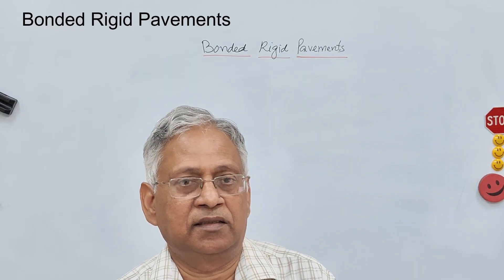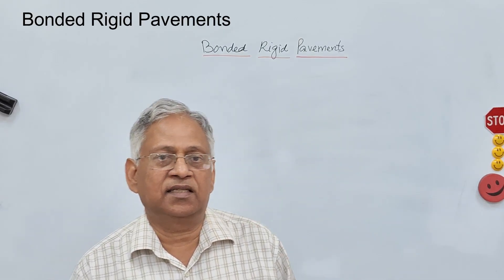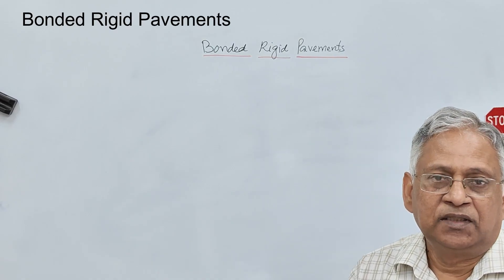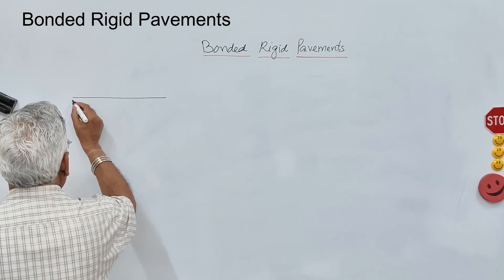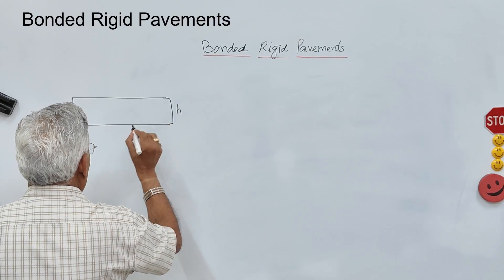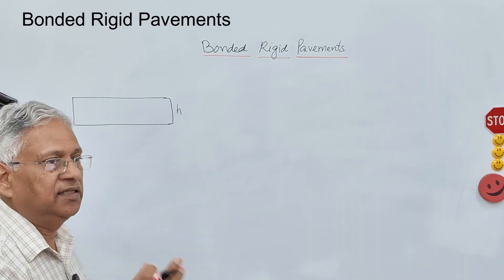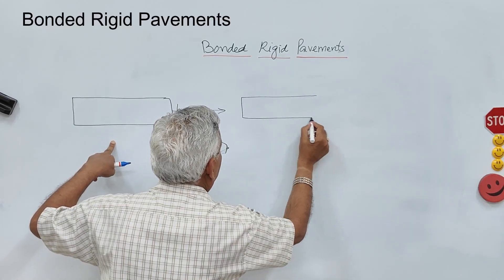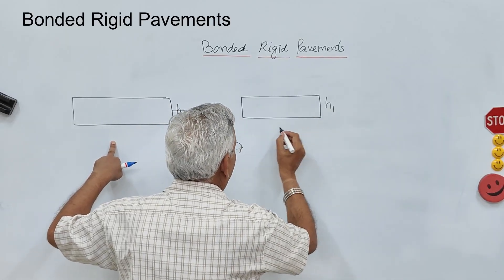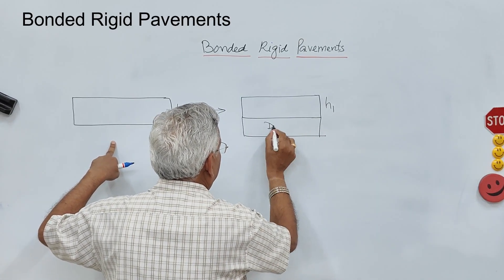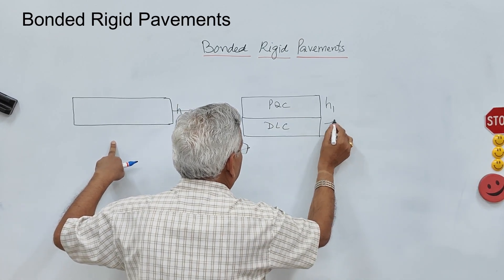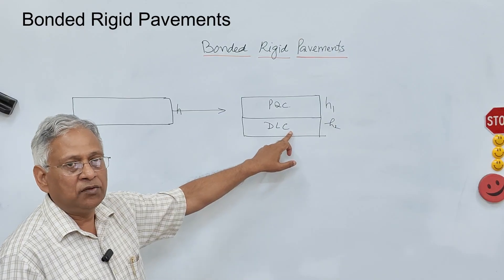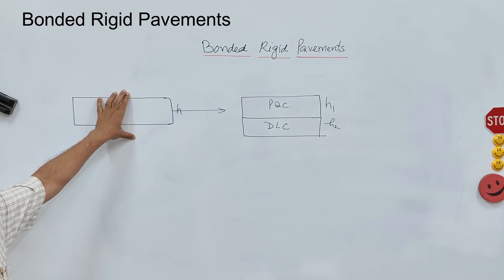Now this H is replaced by two layers. Layer one will be of DLC — let us say the layer of DLC is H2 — and the upper layer will be of PQC, let us say H1. So you have a concrete slab of total PQC thickness H over a GSB layer of 200 to 250 mm thickness. This is replaced by two layers: a slab of PQC of thickness H1 and below that a layer of DLC of thickness H2. The combined flexural stiffness of the PQC and DLC should be equal to or greater than the flexural stiffness of the slab of thickness H.